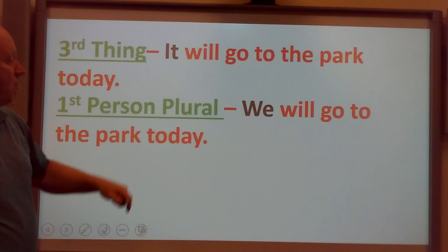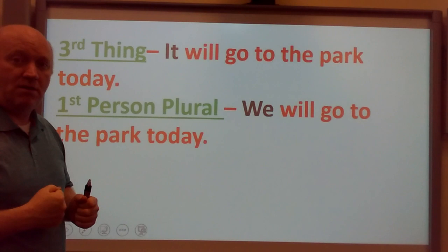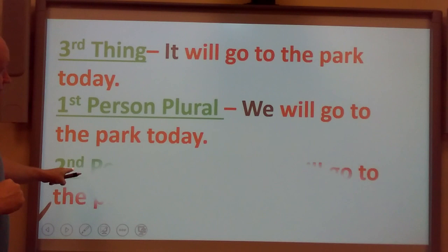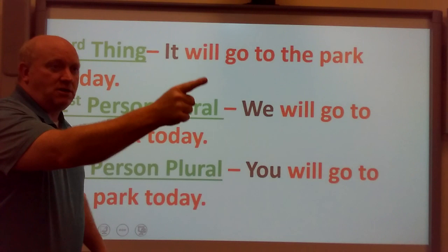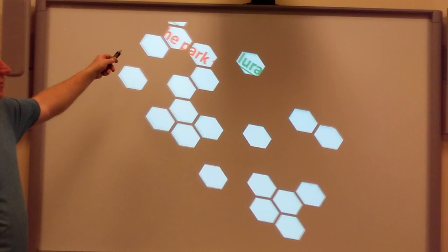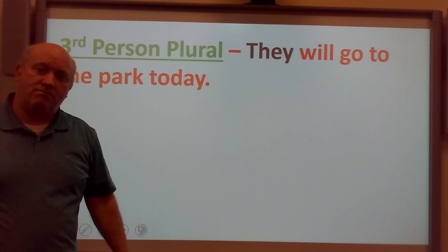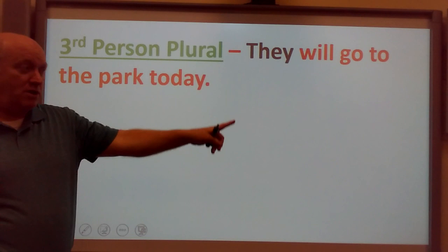First person plural: 'We will go to the park today.' Remember, plural means two or more. So if there are five of us in a room, we say 'We will go to the park today.' Second person plural doesn't change — you can say 'You all will be going to the park today.' Third person plural: 'They will go to the park today' — for example, five people over there. Plural means two or more.